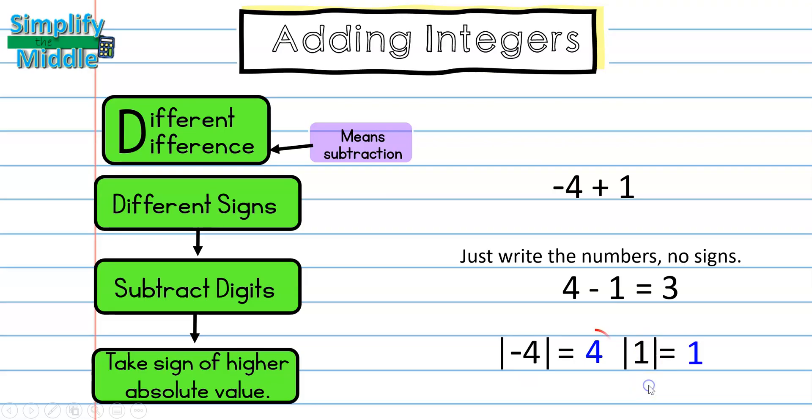So, because 4 is a higher absolute value and it came from this negative 4 here, my answer will also be negative. So, negative 4 plus positive 1 equals negative 3.